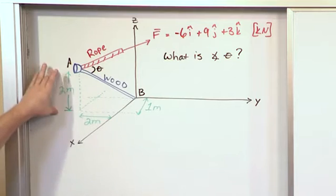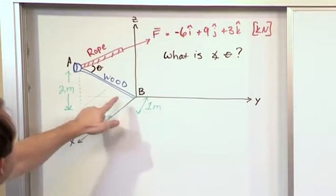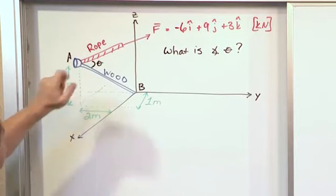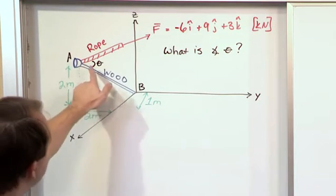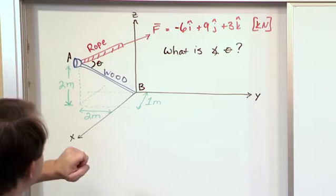We also have some dimensions written here, which tell us the x, y, and z coordinates of the intersection point. Notice the wood is terminated at the origin, which I'm labeling point B.